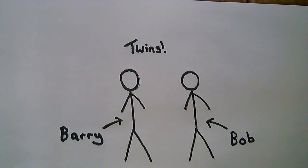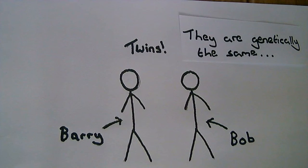So we have two twins, one is called Barry, the other is called Bob. Now these twins are genetically identical, so they're the same genetically.